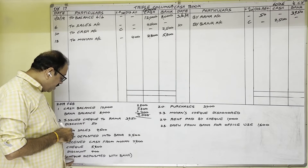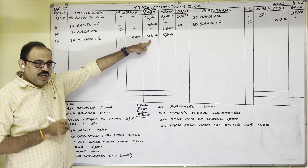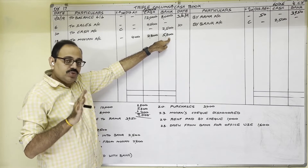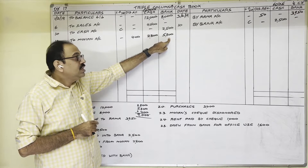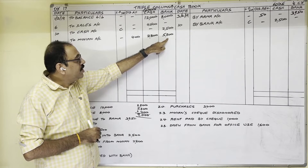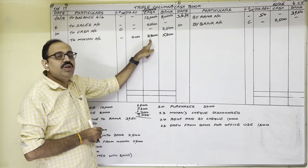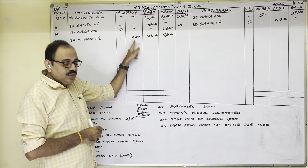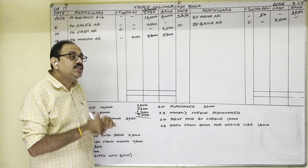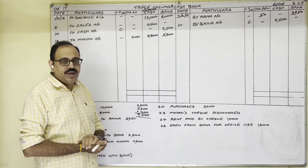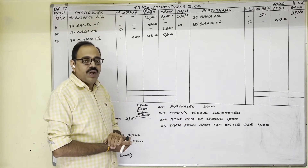Suppose the question did not say the cheque was deposited into bank on the same day. Then: cash received 2,800, cheque received 5,800 — but since the cheque is not deposited on the same day, we treat it as cash. So write 5,800 plus 2,800 = 8,600 in the cash column only, with discount 400. When later that cheque is deposited into bank, treat it as a contra entry on that date.